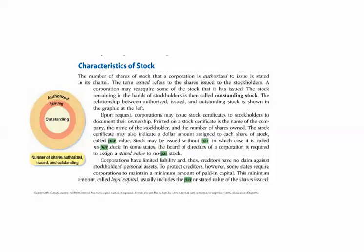So par is arbitrary — it's just whatever we pick. Corporations, when they form, oftentimes are told by the Secretary of State in which they're forming their corporation, that they must set a par for their stock. Now the word oftentimes used is called par value, and I don't really like par value because it doesn't have any value. It should be par arbitrary number. So we'll call it par value — that's what the book is using.